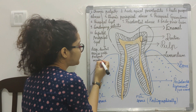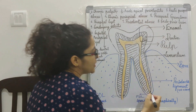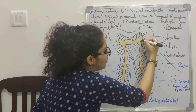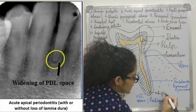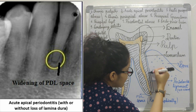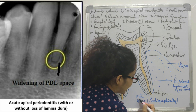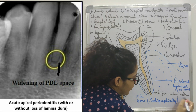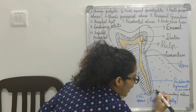Coming to acute apical periodontitis — when you take an x-ray, as discussed in the previous class on clinical diagnosis, the infection travels from the pulp and reaches the periapex. Once it reaches the periapex, inflammatory edema starts collecting in the periodontal ligament space.